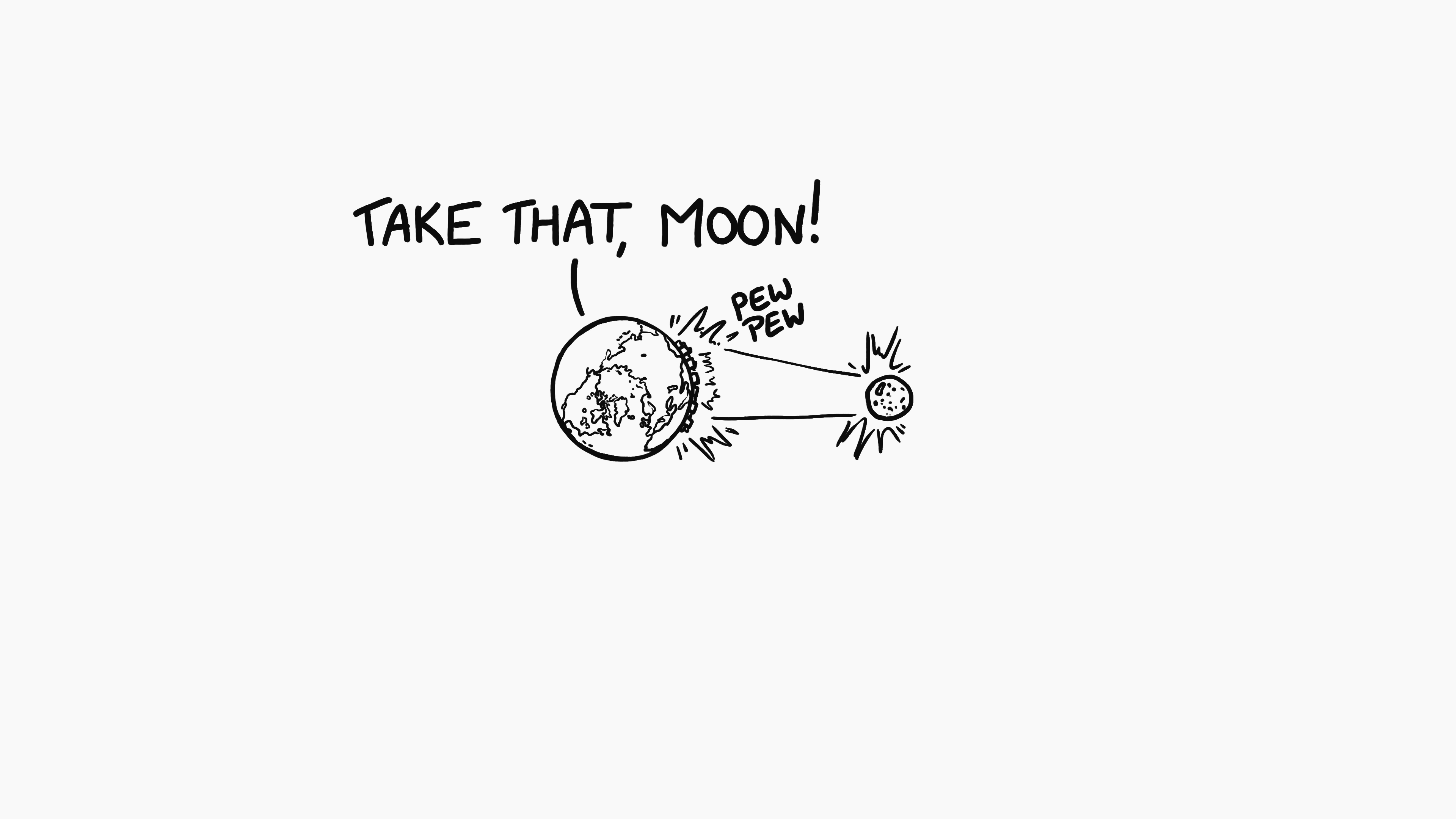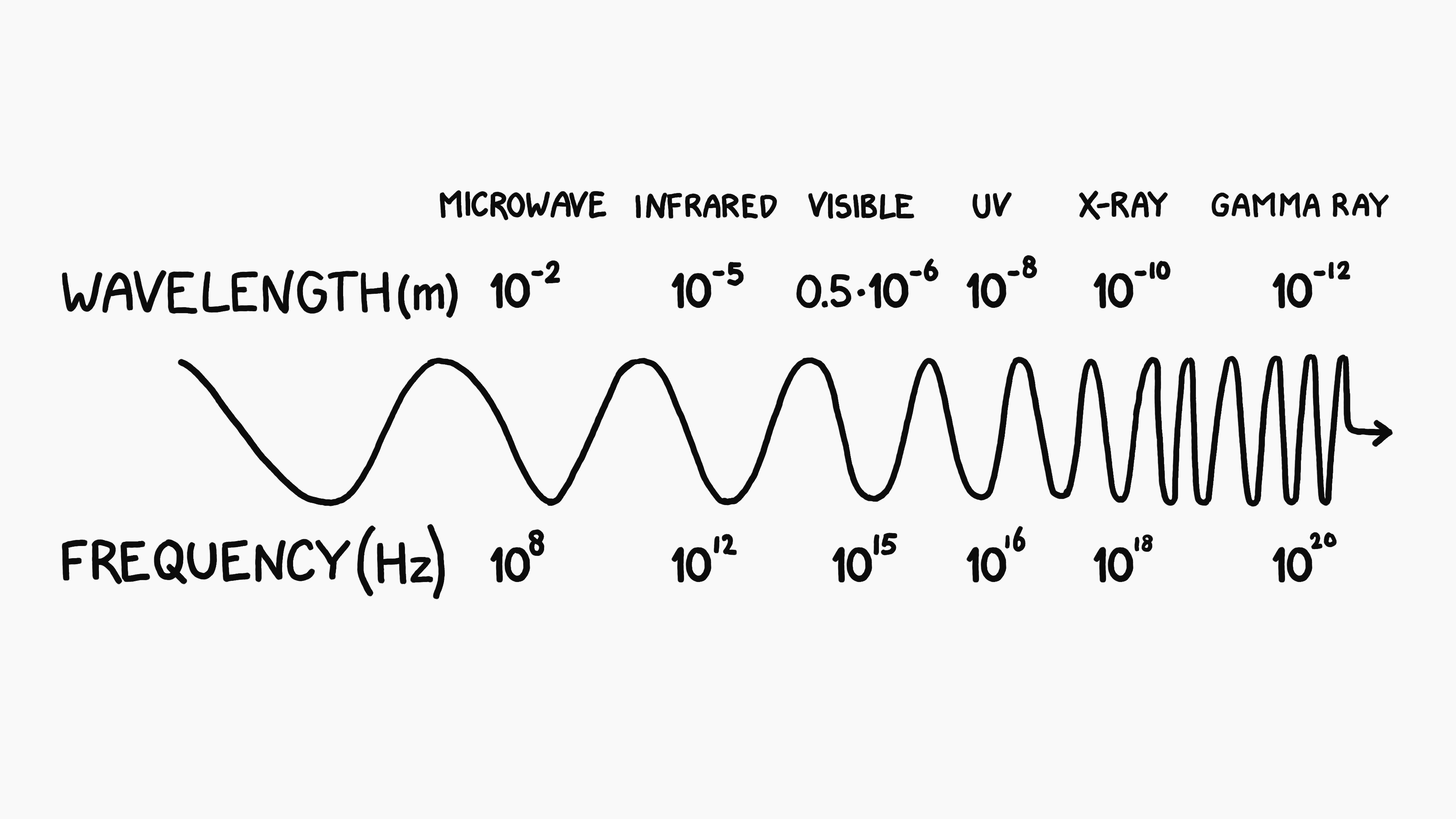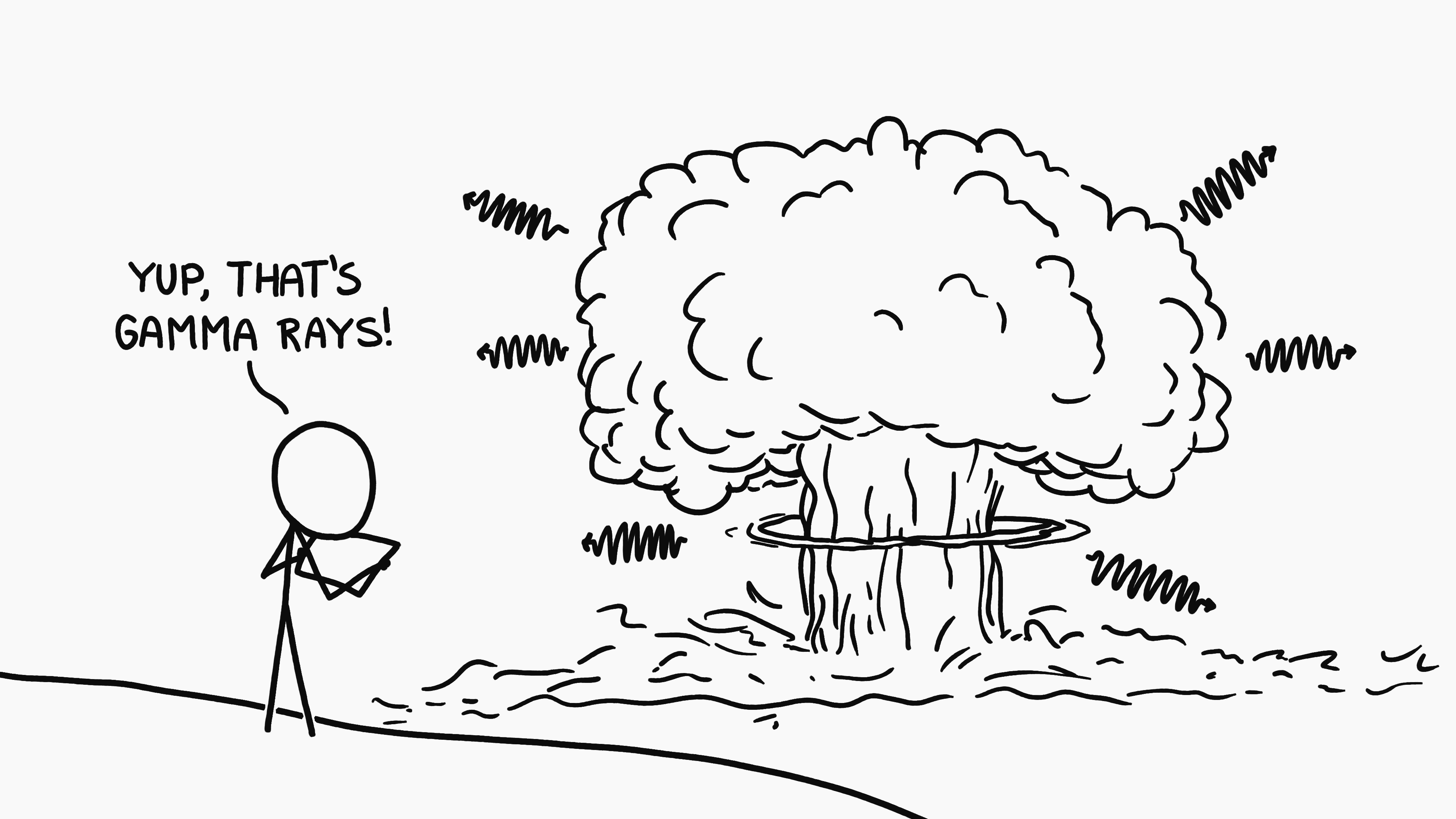The universe contains death rays that make our moon obliterating beam look like a handheld laser pointer. Gamma ray bursts. A gamma ray is just what we call a very high energy photon of electromagnetic radiation. When you see a chart of the electromagnetic spectrum, gamma rays are basically anything more energetic than x-rays. At the high end, they're literally off the chart. They come from high energy events like nuclear explosions.